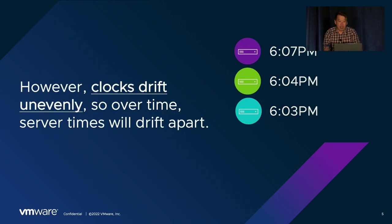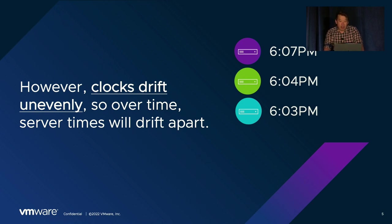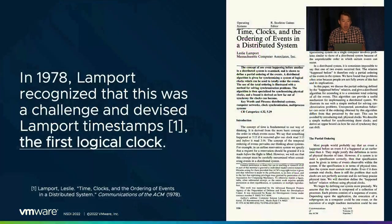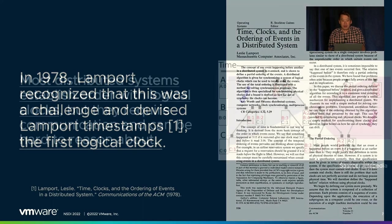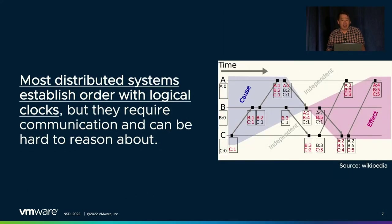But as almost every distributed system textbook will tell you, it turns out that clocks drift unevenly. So if you let clocks run free in servers, they'll slowly drift apart. Lamport recognized this in 1978 and developed logical clocks so that distributed systems could be built without relying on wall clocks. But even today, logical clocks are the foundation of nearly every distributed system.